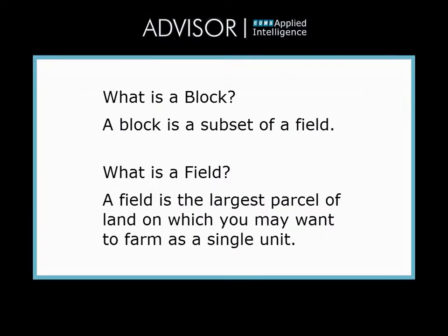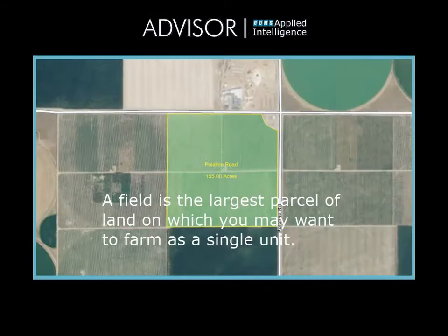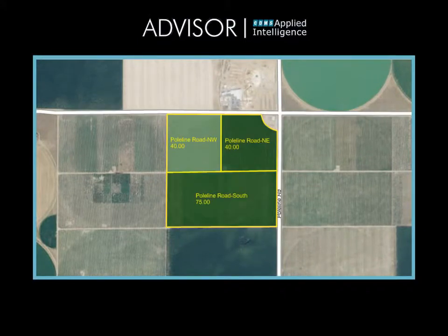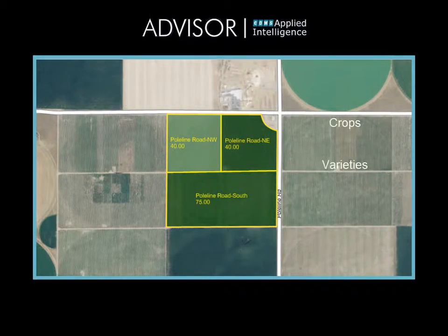In Advisor, a block is a subset of a field. A field is the largest parcel of land on which you may want to farm as a single unit. The field can be divided into multiple blocks. Some examples of why multiple blocks are used include tracking crops, varieties, and crop destinations.